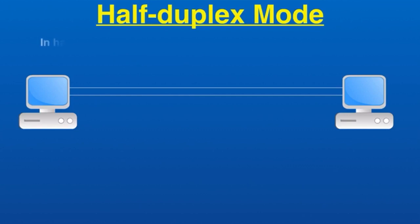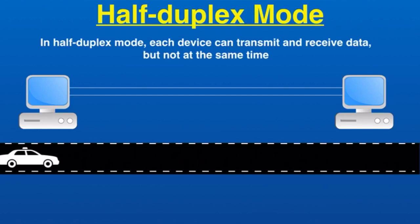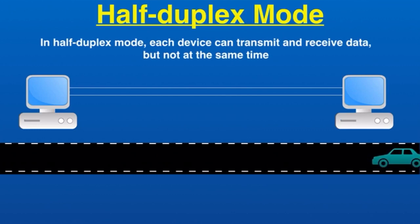In half duplex mode, each device can transmit and receive data, but not at the same time. When one device is sending, the other can only receive, and vice versa. Half duplex is used when there is no need for communication in both directions simultaneously — data can be transmitted in both directions but only one direction at a time. It supports two-way traffic but in only one direction at a time. Half duplex is still like a one-way road where a vehicle traveling in the opposite direction must wait until the road is empty.